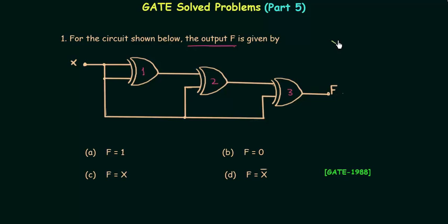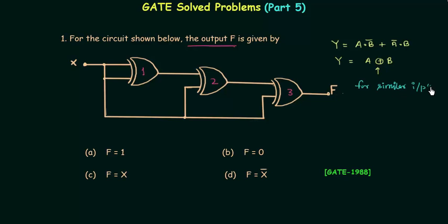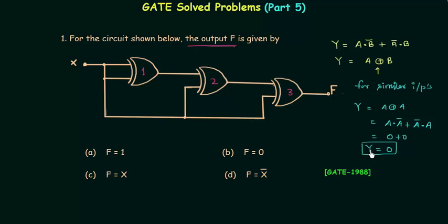In the case of a two-input XOR gate, the output y is equal to (a AND b-complement) OR (a-complement AND b). We can also represent it using the XOR symbol. If we have two identical inputs — say both are a — then y = a XOR a, which expands to (a AND a-complement) OR (a-complement AND a). Since a AND a-complement equals zero, the output y equals zero when both inputs are the same.